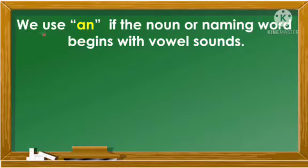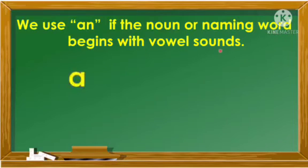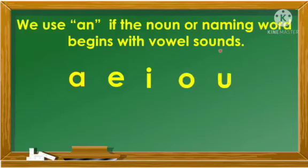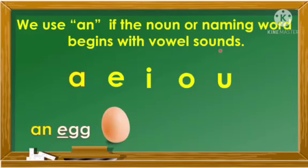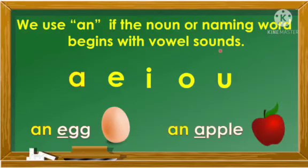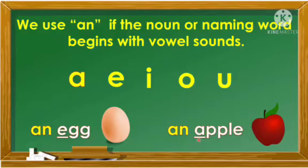We use 'an' if the noun or naming word begins with vowel sounds: A, E, I, O, U. For example, an egg, an apple — the letter E and the letter A are vowel sounds, that's why we use 'an'.